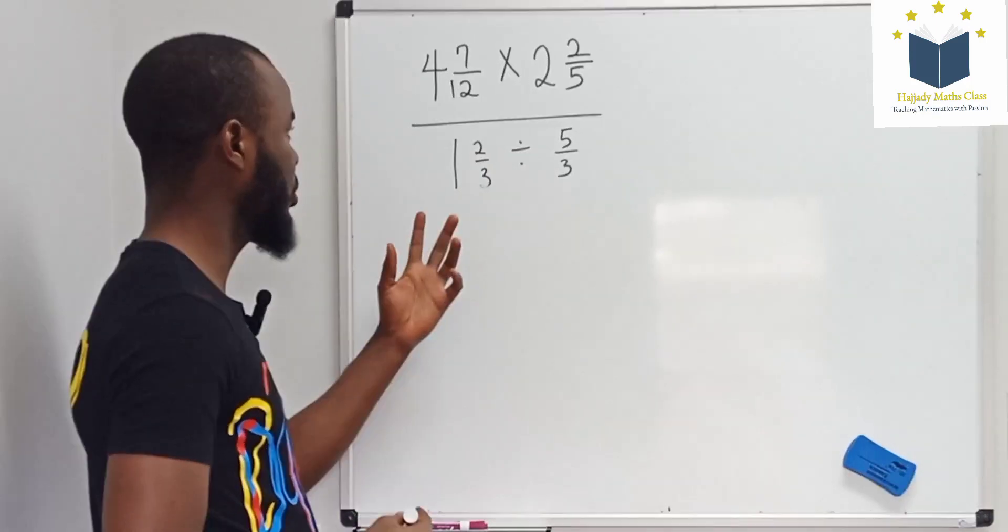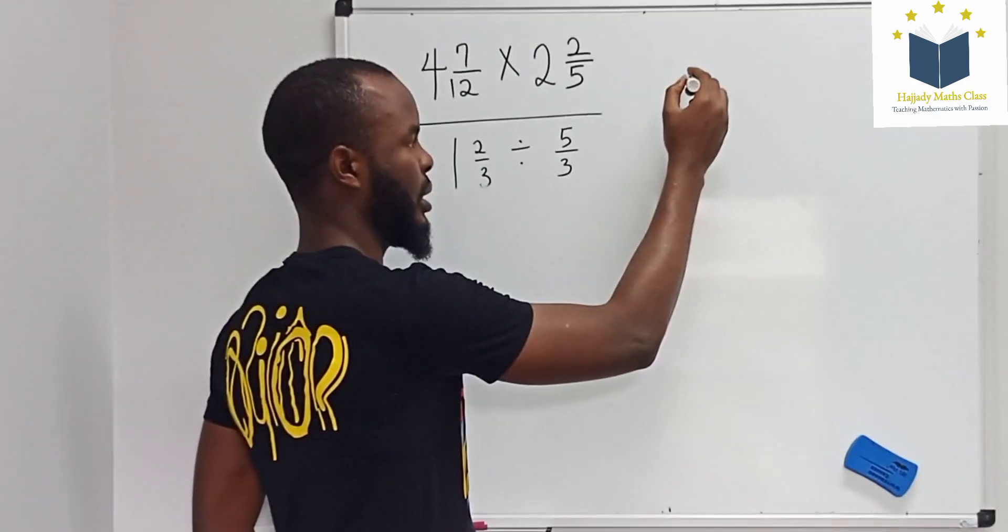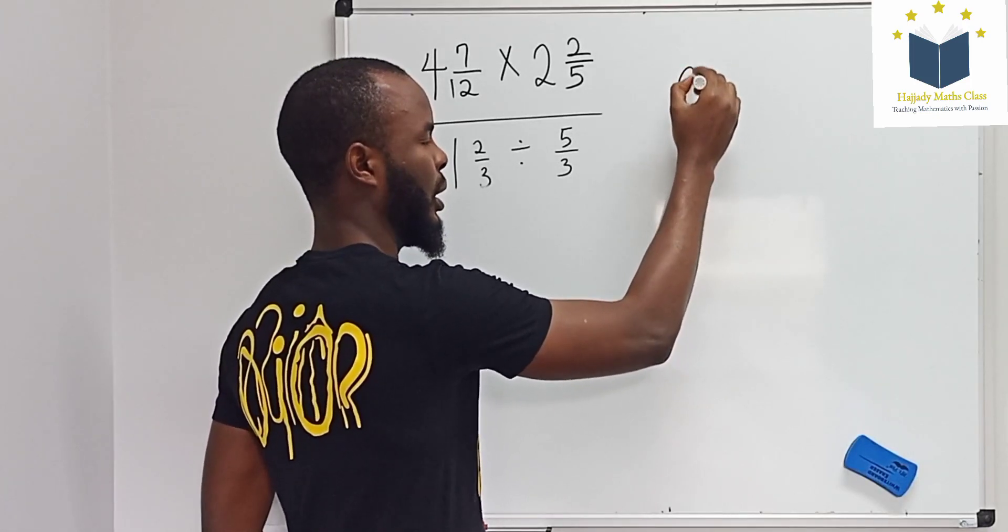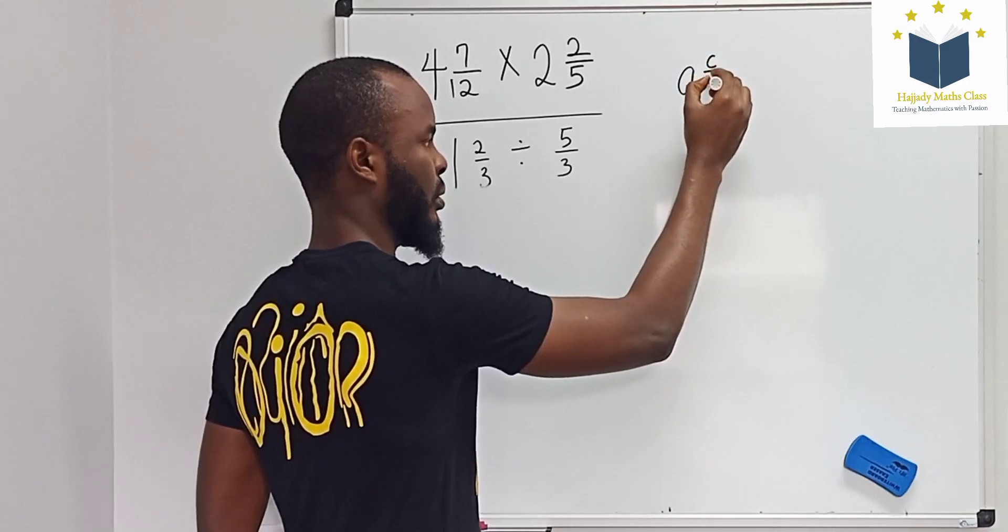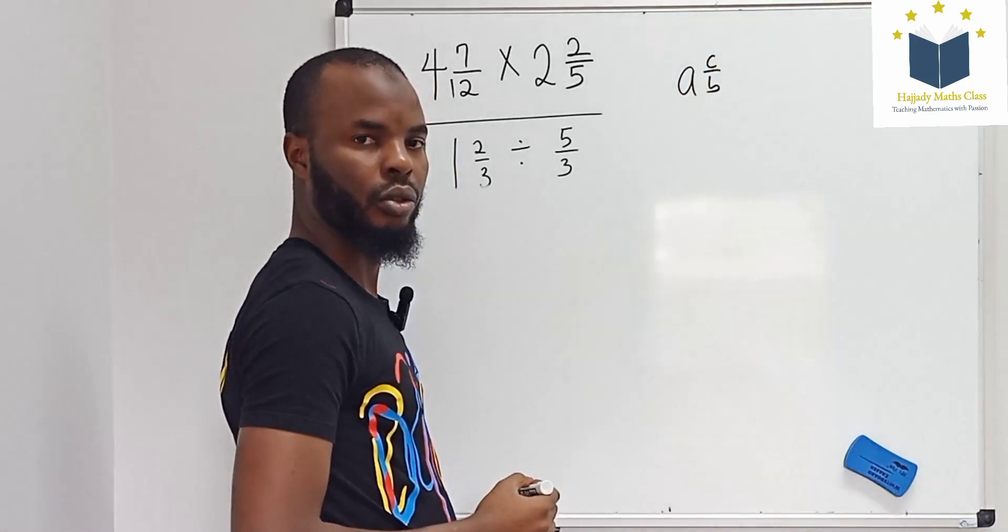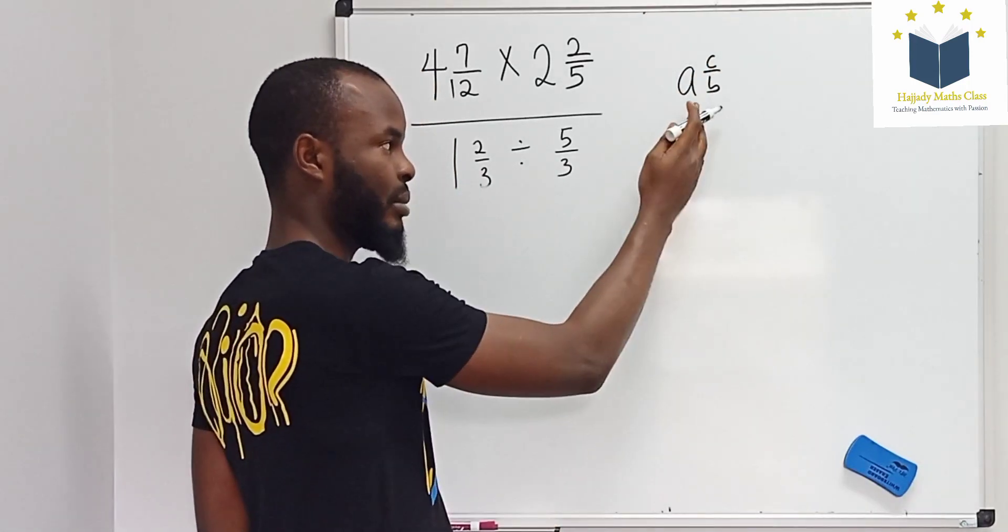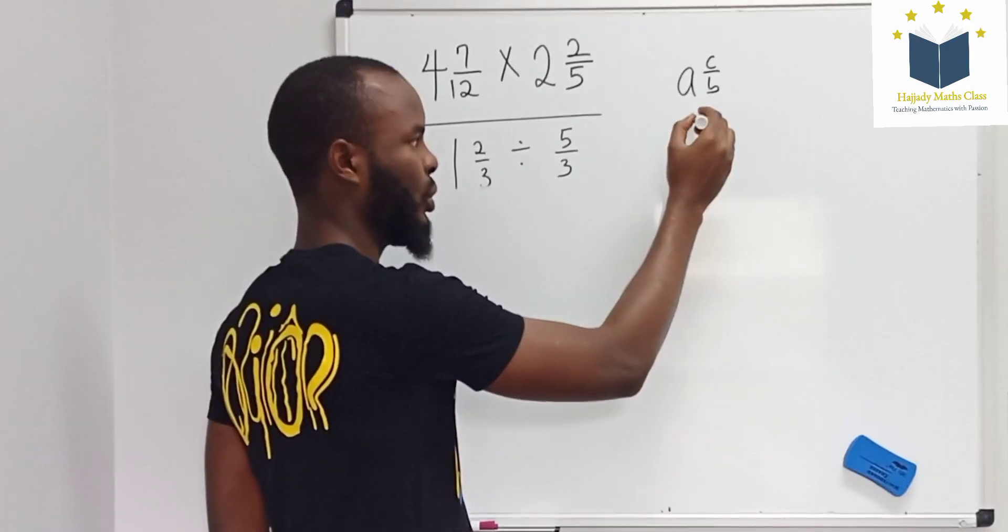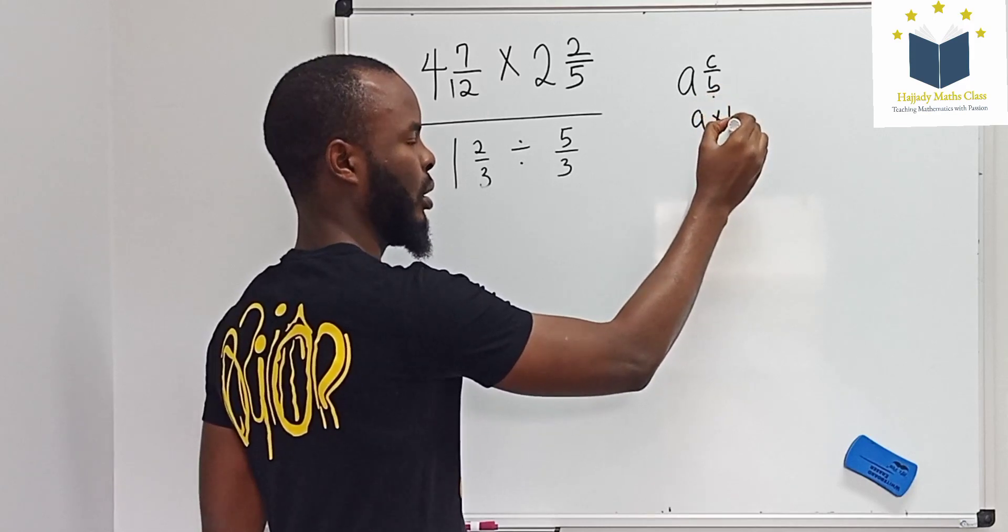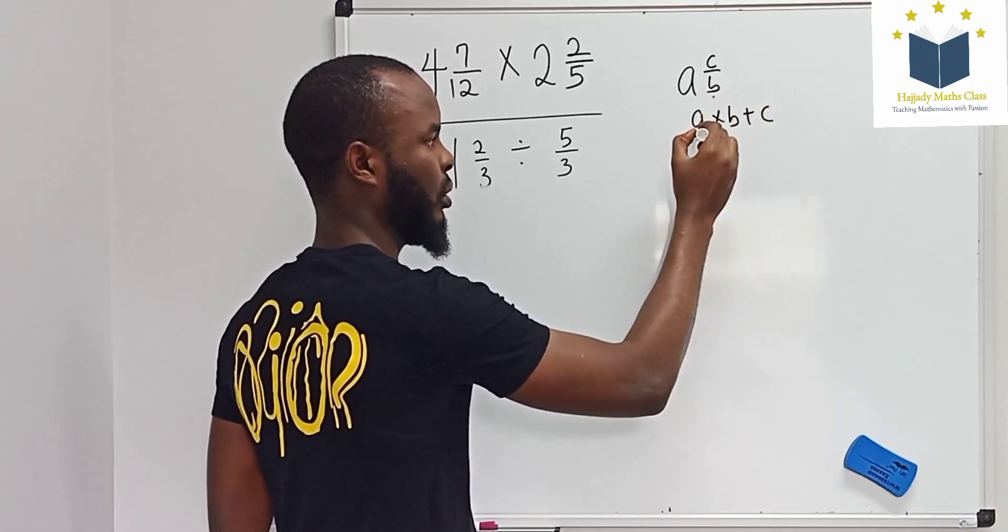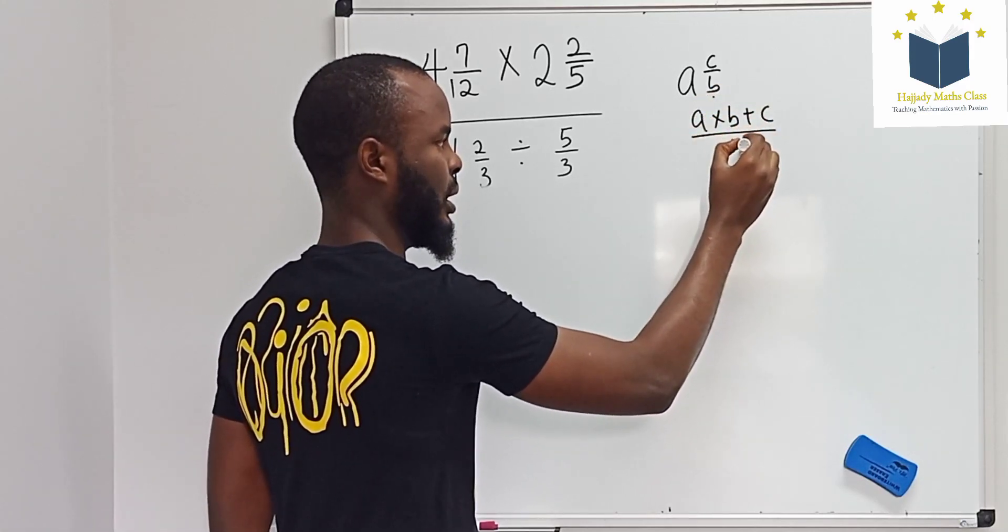Now for me to do this, the first rule I would like to say is that when you have a whole number a and c over b, for you to multiply to convert this mixed fraction, we use the rule of the whole number a multiplying by the denominator plus the numerator over the denominator.